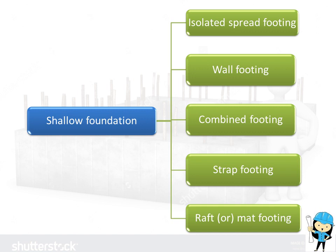There are 5 types of Shallow Foundation. They are: Isolated Spread Footing, Wall Footing or Strip Footing, Combined Footing, Strap Footing, and Raft or Mat Footing. We are going to elaborately see about all these footings.